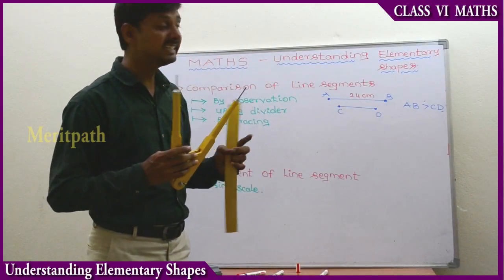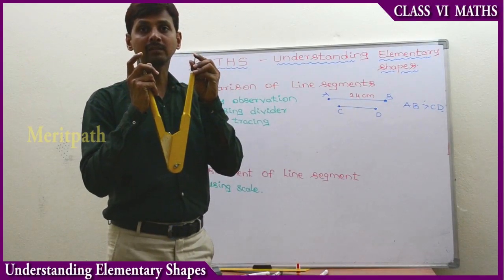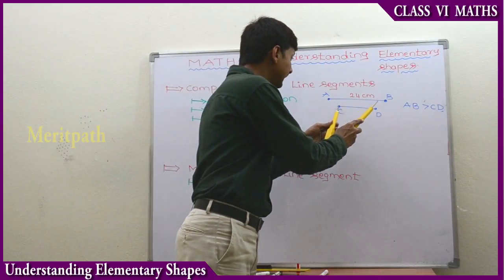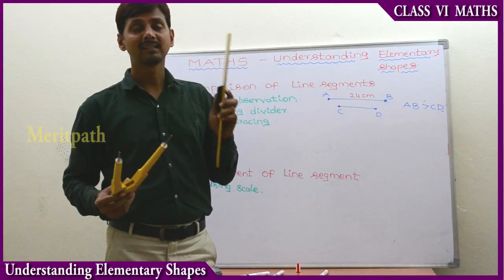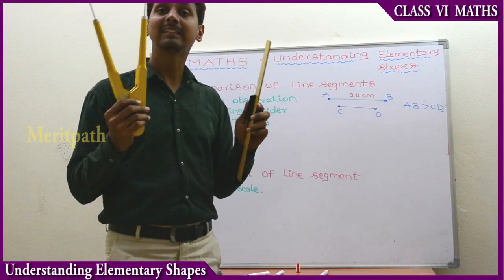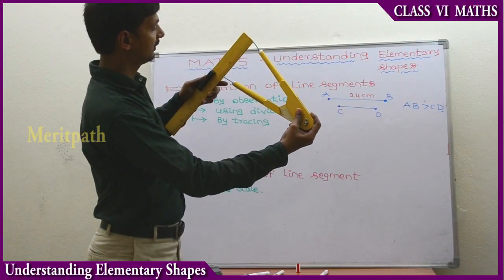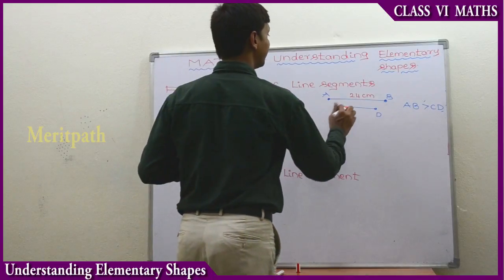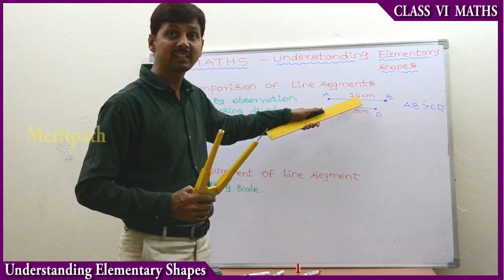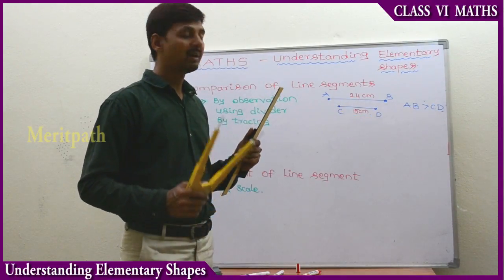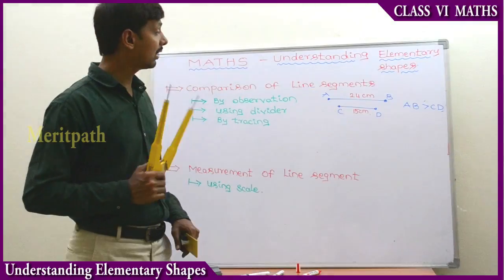Now let's find out the measurement of CD. We place the two endpoints of the divider at points C and D. Then we use the scale ruler to measure this length. Measuring from 0 to 15, we get 15 centimeters. So CD is 15 centimeters. Comparing: AB is 24 centimeters and CD is 15 centimeters. Using the divider and ruler, we have confirmed that AB is greater than CD.